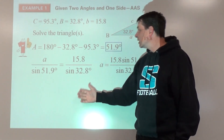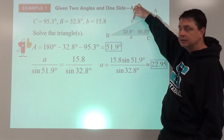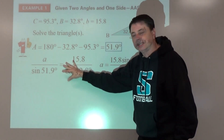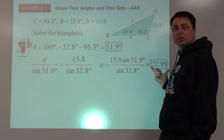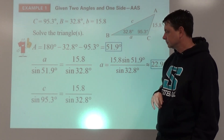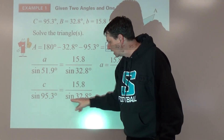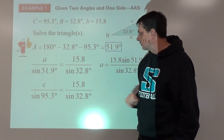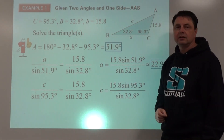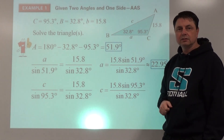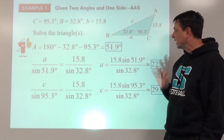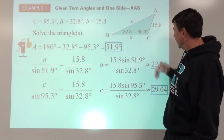We do the same process to find the other unknown, C. Set up C over sine of 95.3° equal to 15.8 over sine of 32.8°. I'd rather use the given values rather than the rounded ones. Cross multiply: C times sine of 32.8° equals that product, then divide both sides by sine of 32.8°. Type that into your calculator — you should get 29.04. We were given three things and found three things.